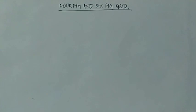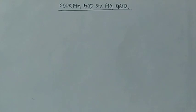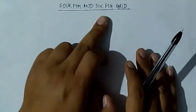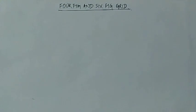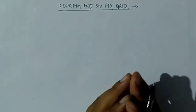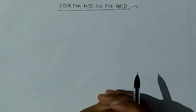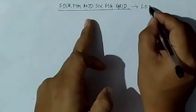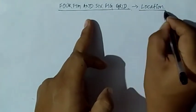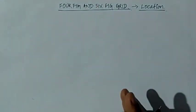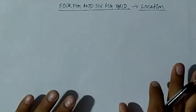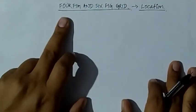Hello students, welcome to my YouTube channel. Let's continue with the chapter on topographical maps. In this video, I'm going to discuss the four-figure and six-figure grid reference. The main use of four-figure and six-figure grid reference is to locate a place — it will give us the location of a place.